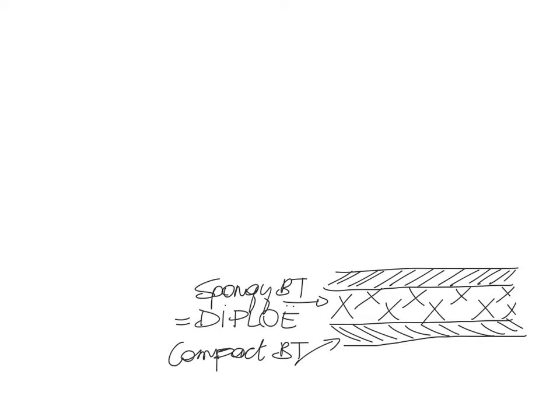And then we have our spongy bone tissue, better called diploe, in between. So we refer to this spongy bone tissue in flat bones as diploe — be sure you put the two dots, the umlaut, on top of the E. This again is compact bone tissue, and we must always cover our bone structures with a double-layered periosteum.